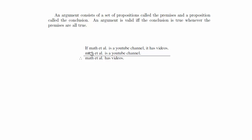Here's an example of a logic argument written out in text form. It says 'If Math et al. is a YouTube channel' — that's the premise above the line of inference. The line of inference is followed by the symbol for 'therefore', and then the conclusion: 'Math et al. has videos.' Each line above the line of inference is called a premise, and what follows is your conclusion.